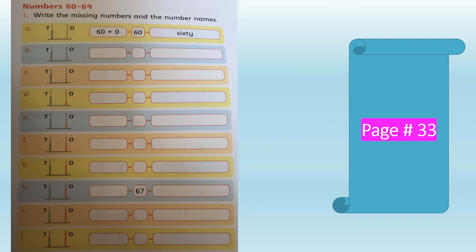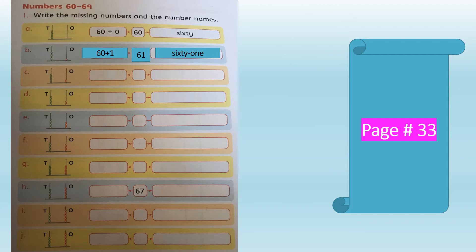Look at part B in the abacus. It has one red bead in the ones rod and six green beads in the tens rod. 6 tens and 1 one makes 61. The number name is S-I-X-T-Y, hyphen or space, O-N-E — sixty-one, 61. In the same manner, fill in parts C and D.